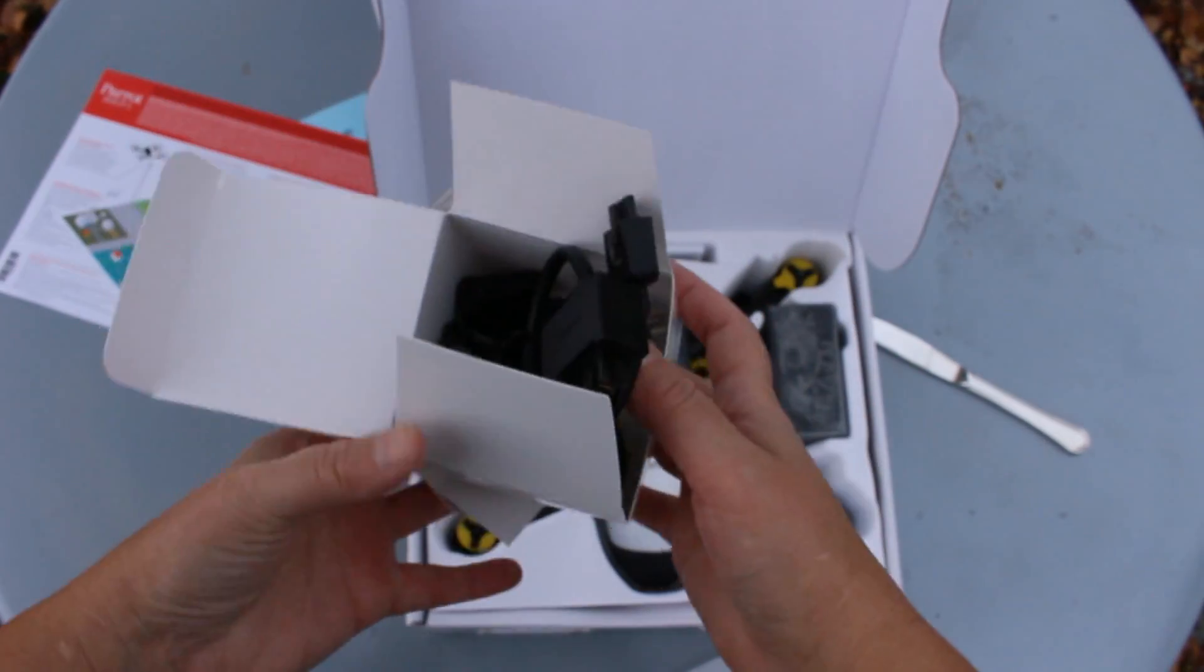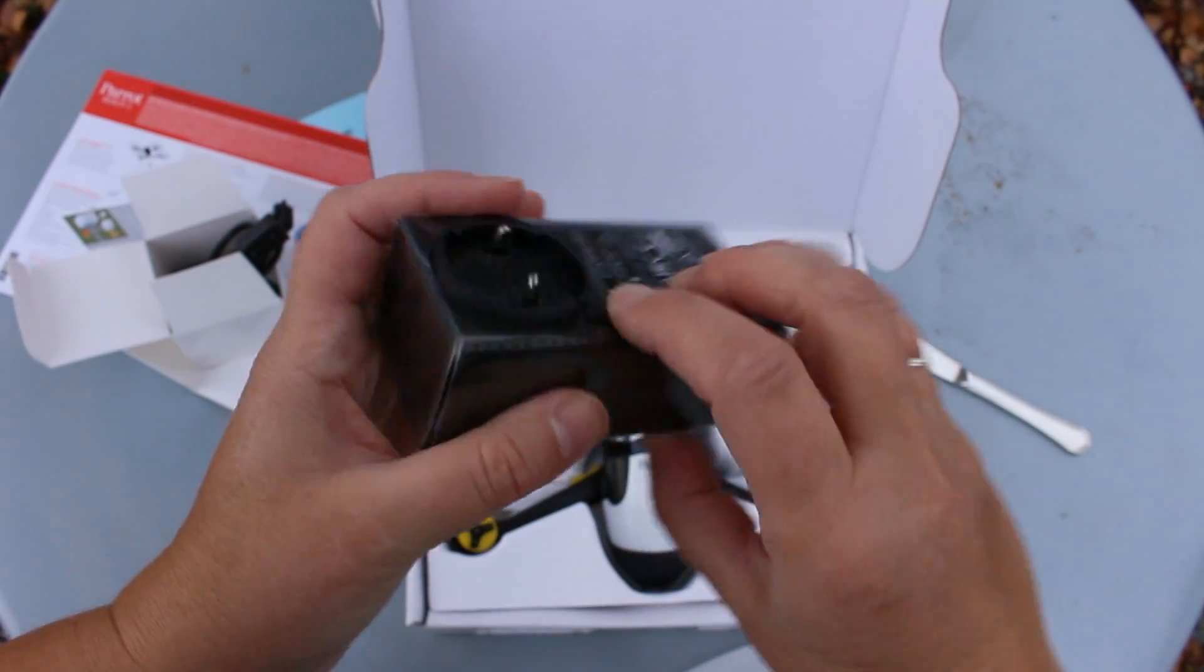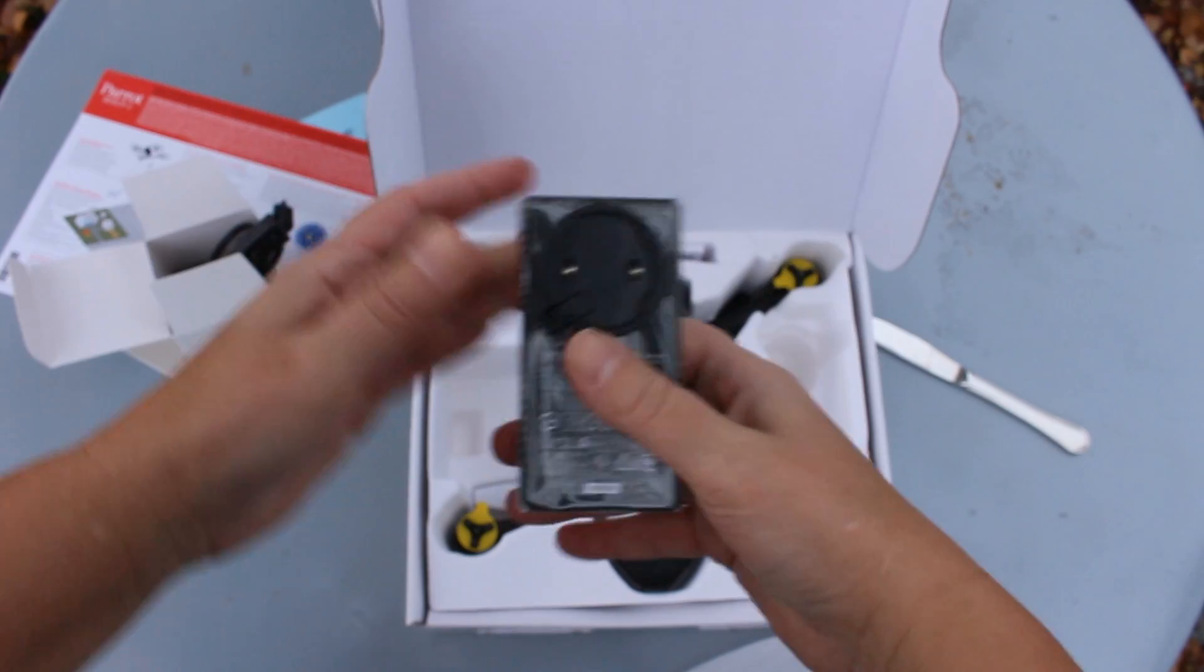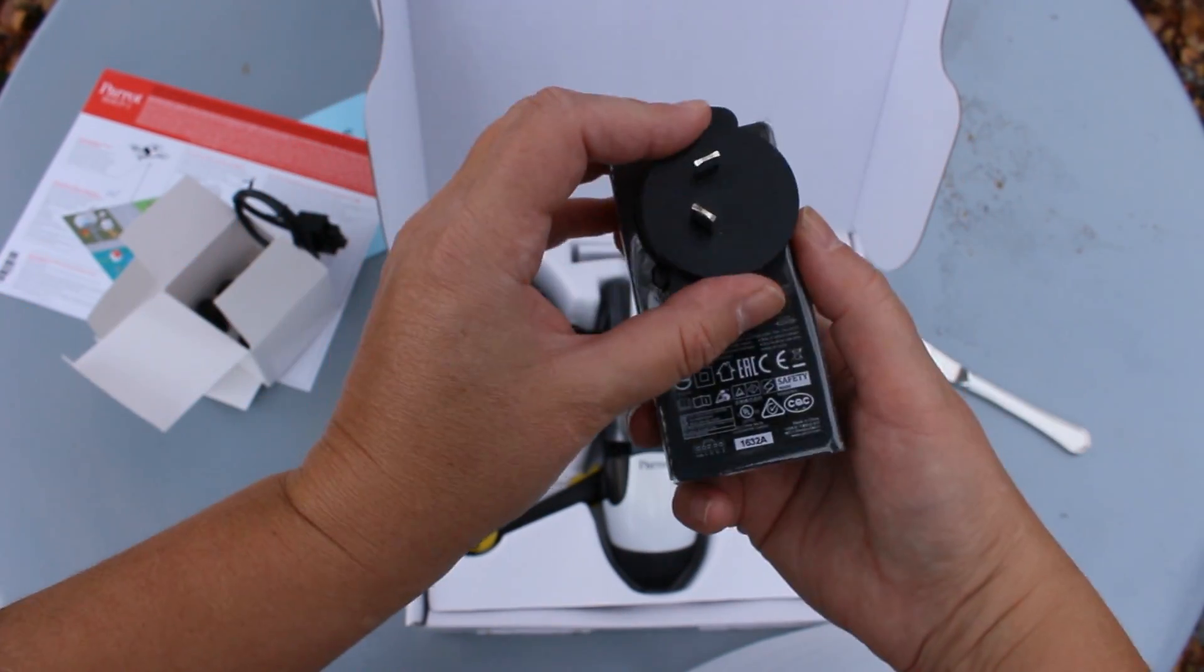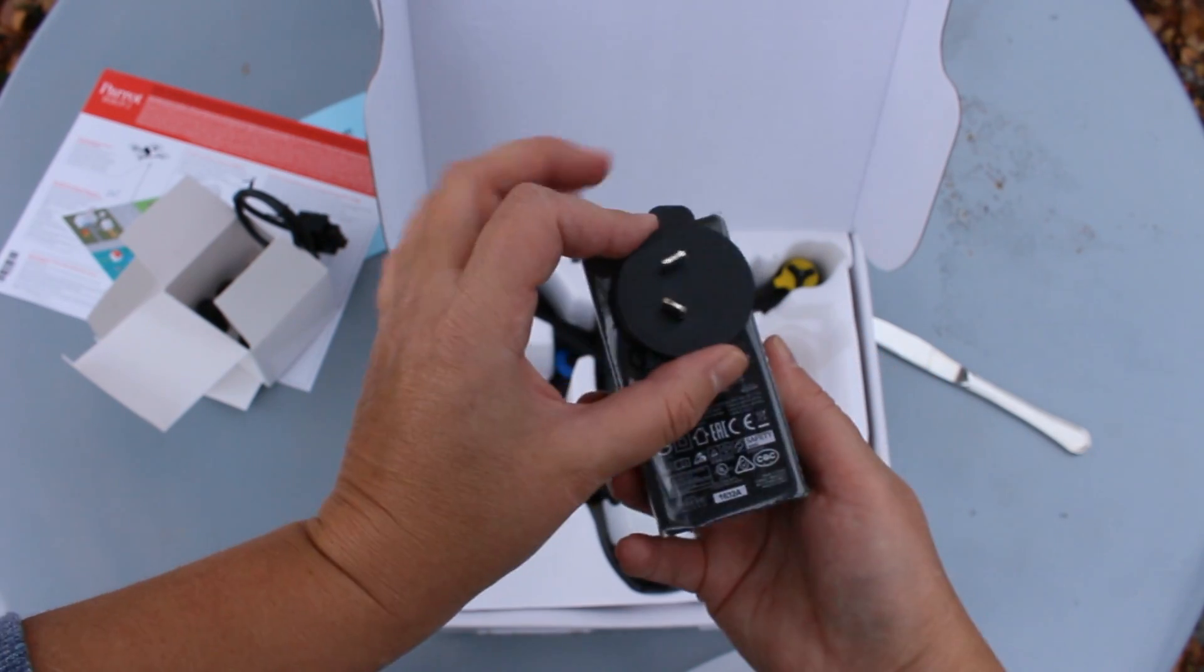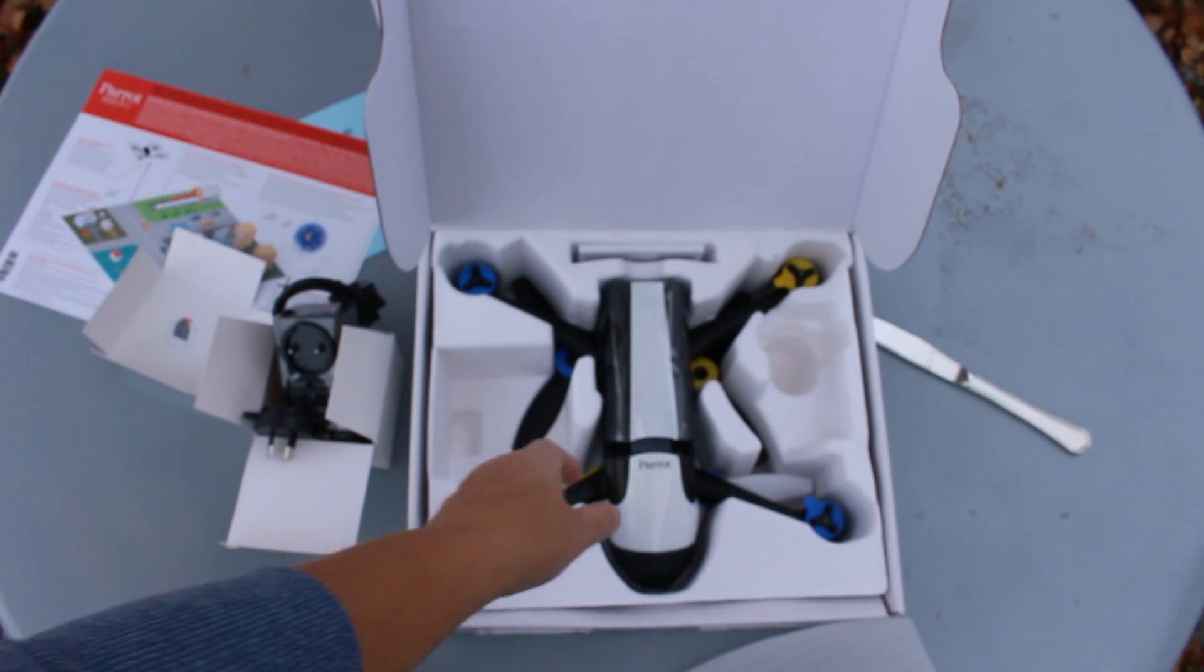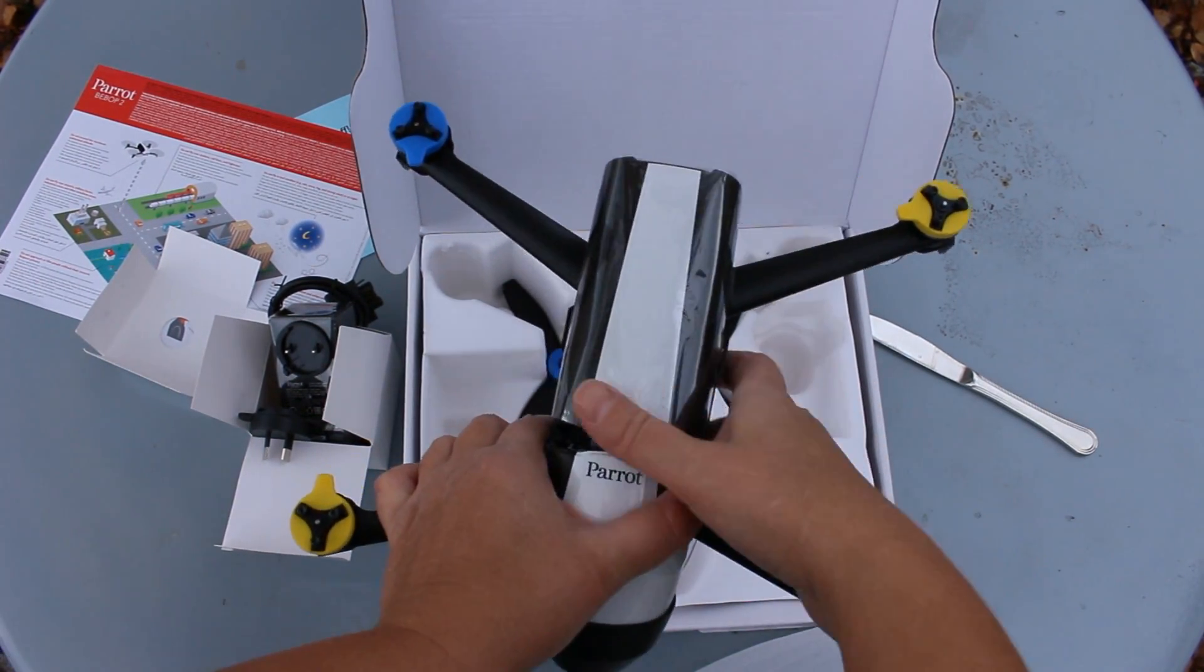All right. Let's see what else we have inside. Pretty little parrot. I'm guessing that's the charger. And you put these on the back like that and adapt it to wherever you are. And let's see what the drone itself looks like. Oh my gosh. This is so light.